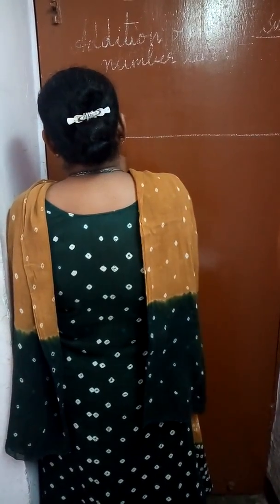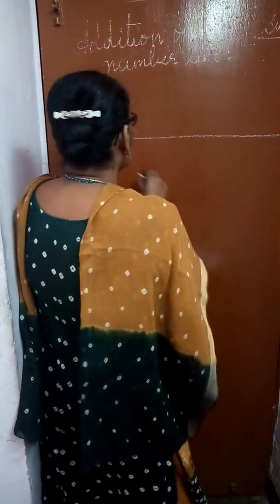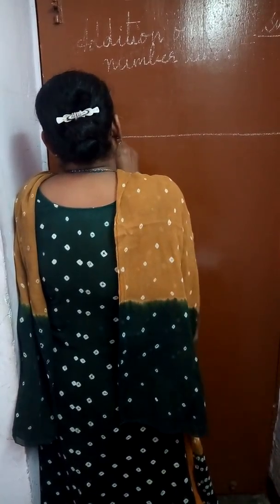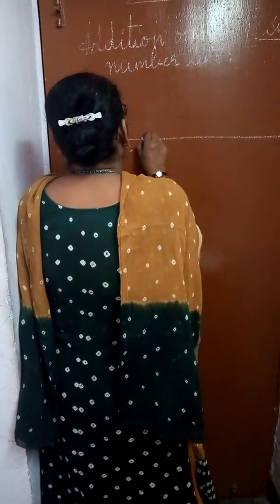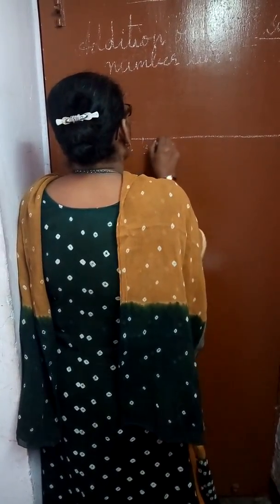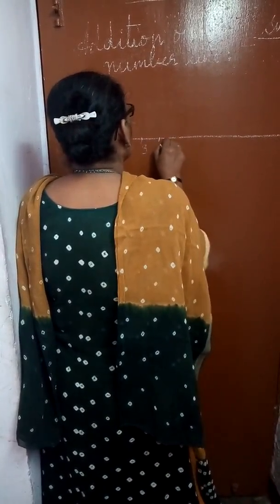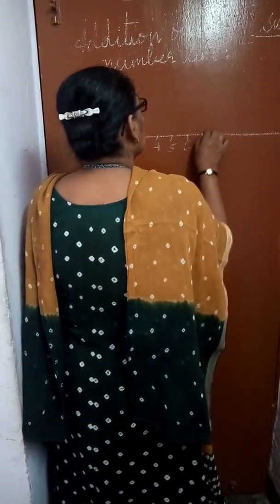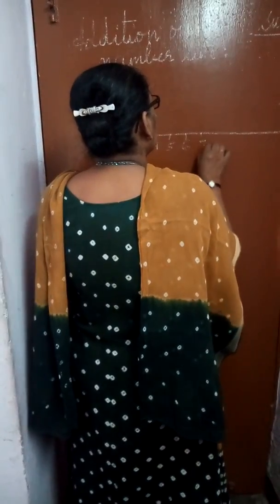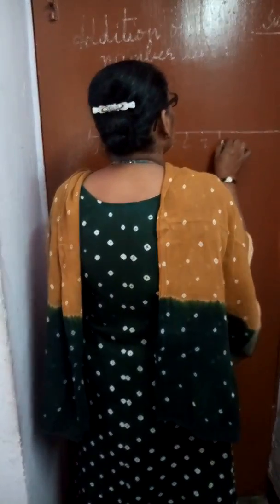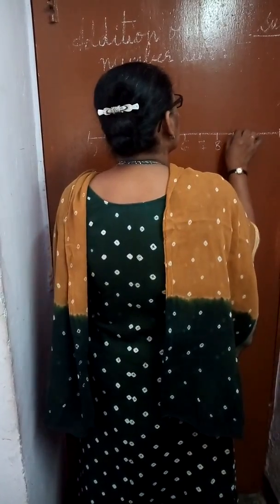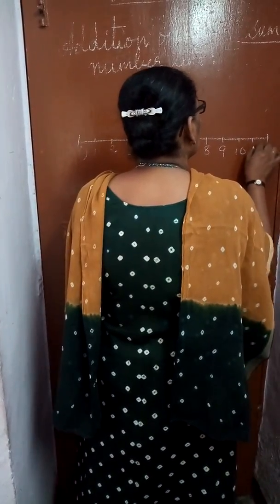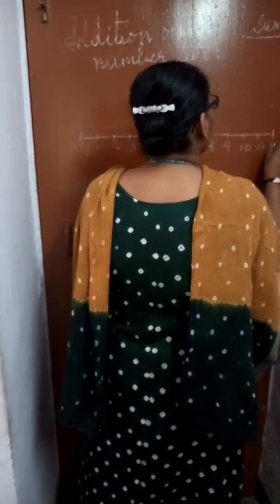Number line always starts with 0: 1, 2, 3, 4, 5, 6, 7, 8, 9, 10, 11, 12.